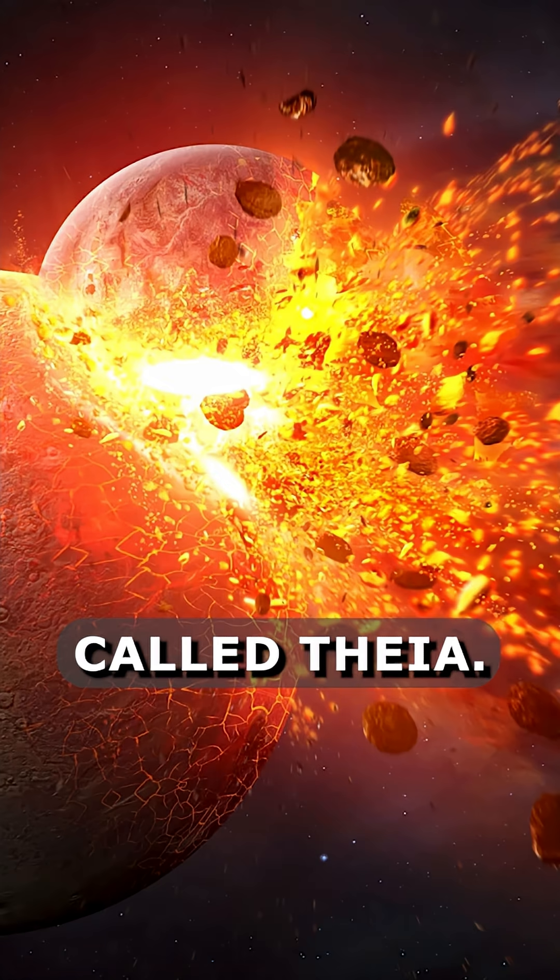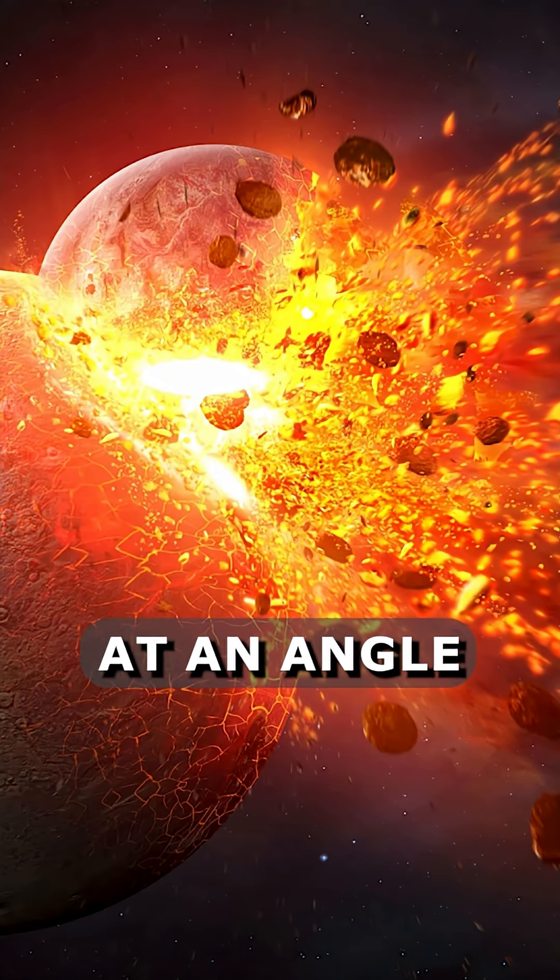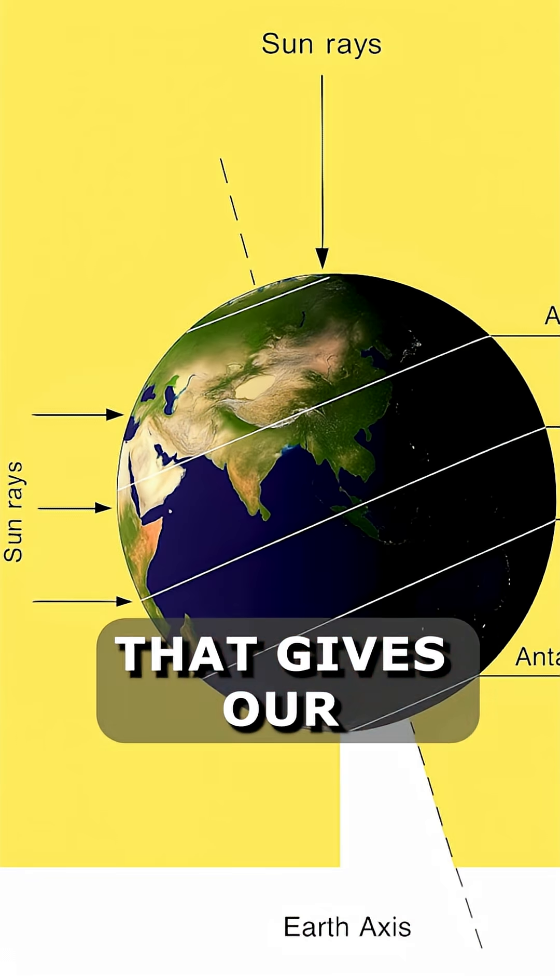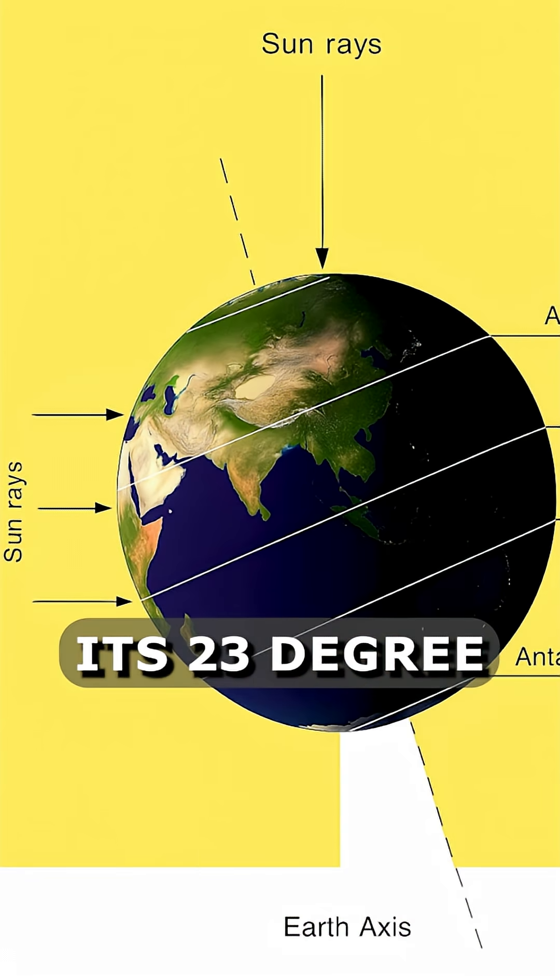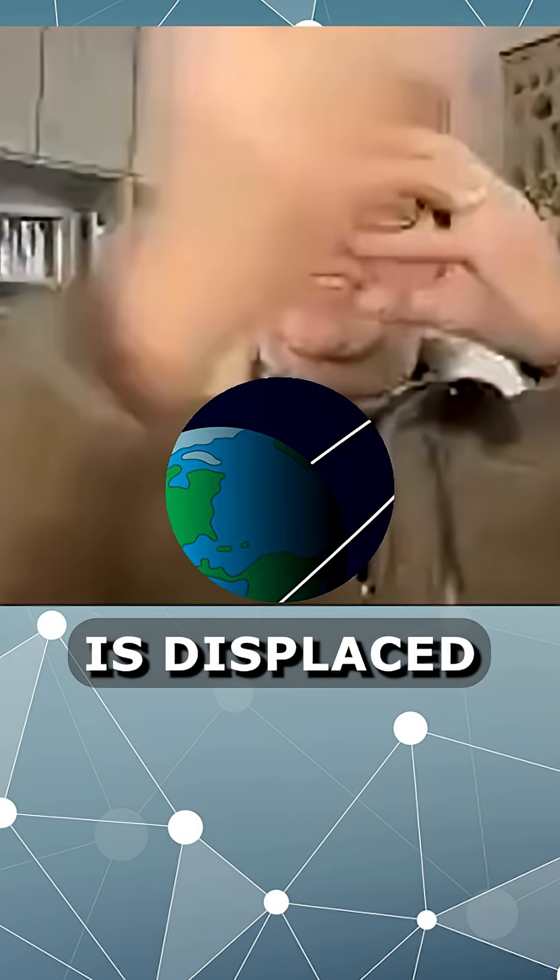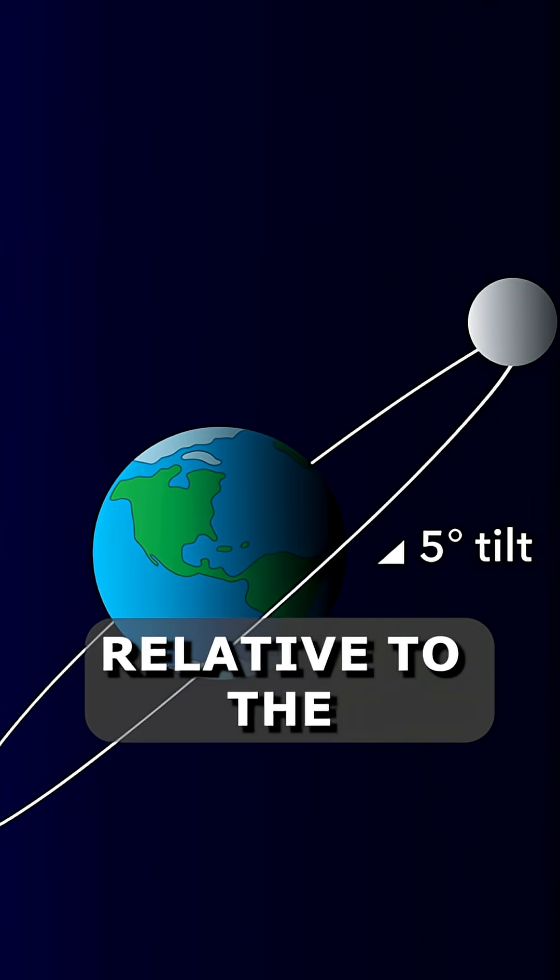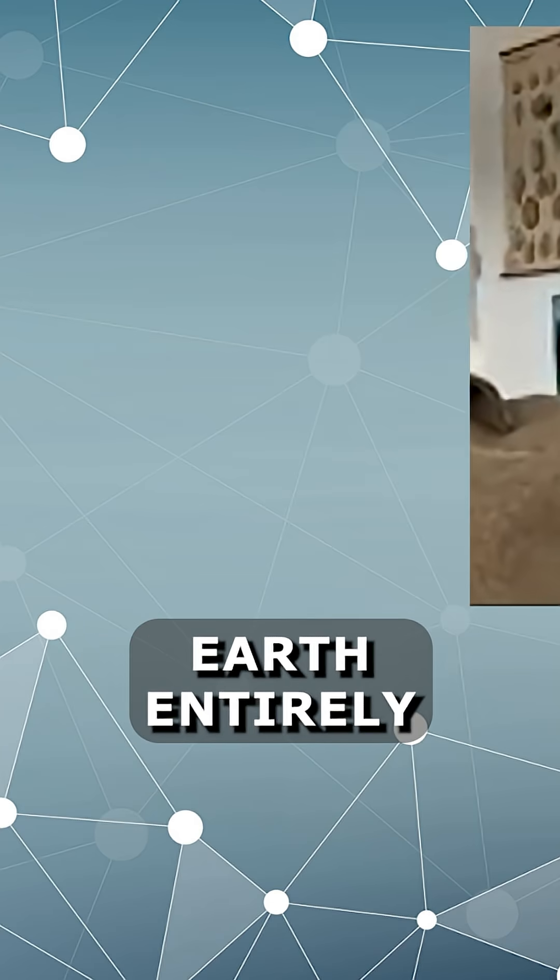Then there was this impact of this Mars-sized planet called Theia. It didn't hit straight on - it hit at an angle that gives our Earth its 23-degree tilt and also means that the moon is displaced five degrees relative to the solar plane. And we know that that melted the Earth entirely.